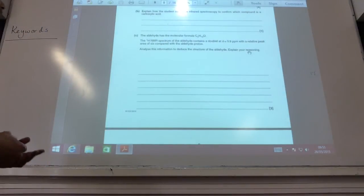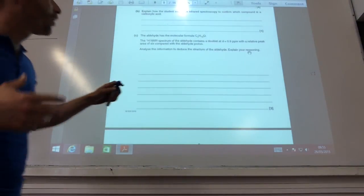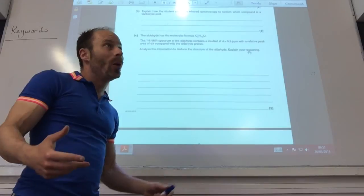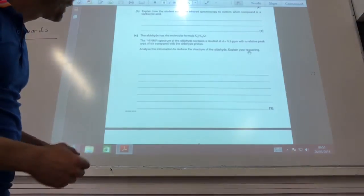And how could we use infrared spectroscopy to identify which one is a carboxylic acid? You would see a very, very broad peak between 2,500 and 3,300 wavenumbers for the OH group.